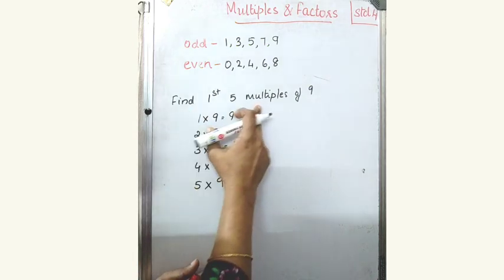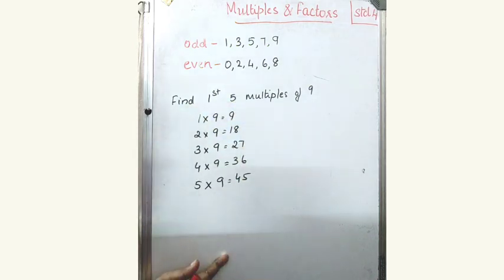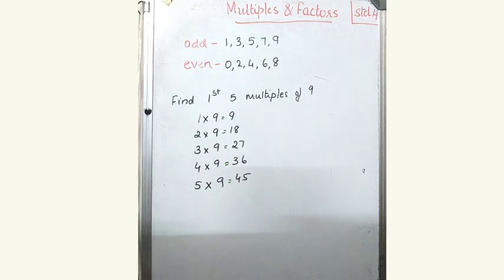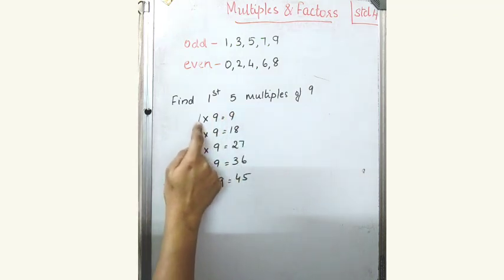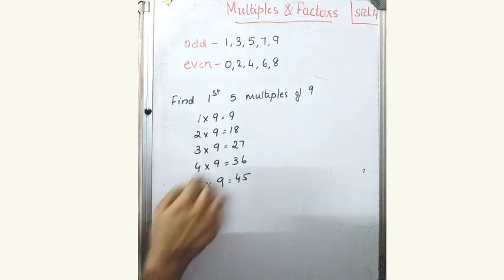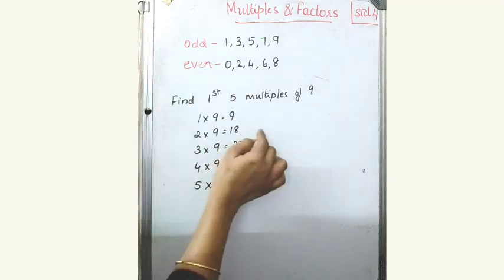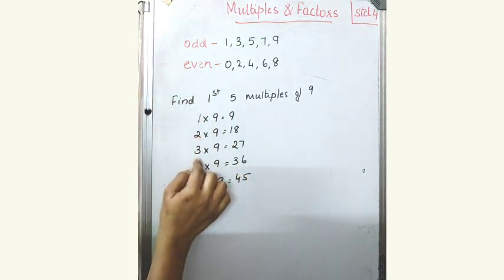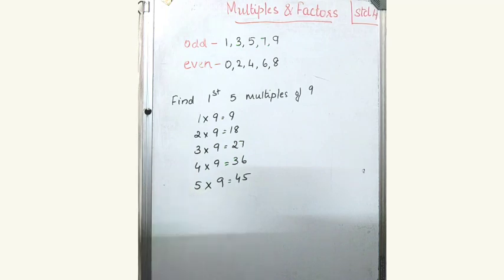The question comes to you like this: find the first 3 multiples or find the first 5 multiples of a number. If you are asked to find the first 3, you have to multiply that number with 1, 2, and 3. If you are asked to find the first 5 multiples, you have to multiply that number with 1, 2, 3, 4, and 5.